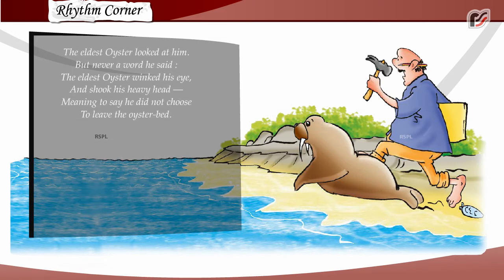The eldest oyster looked at him, but never a word he said. The eldest oyster winked his eye and shook his heavy head. Meaning to say, he did not choose to leave the oyster bed.